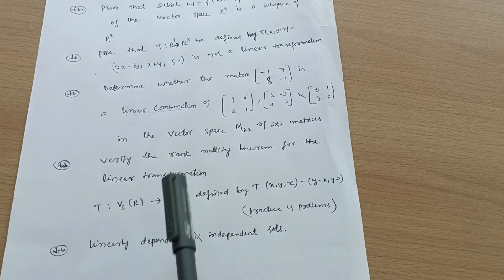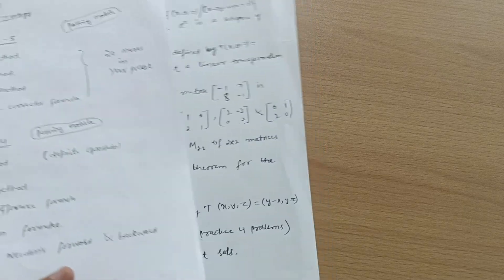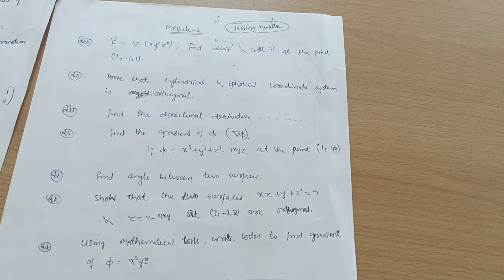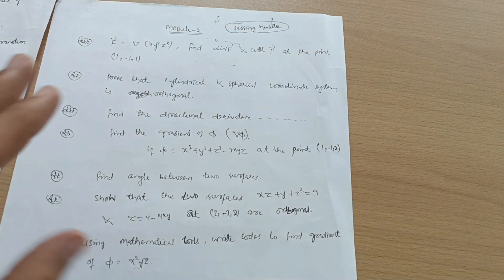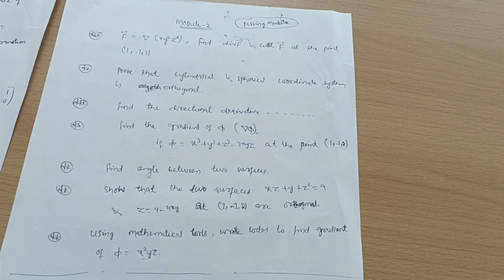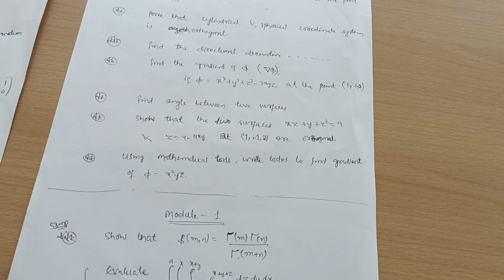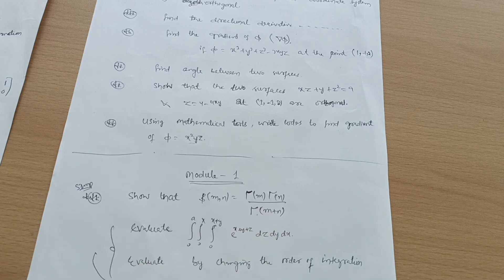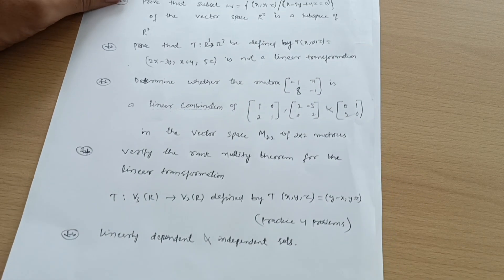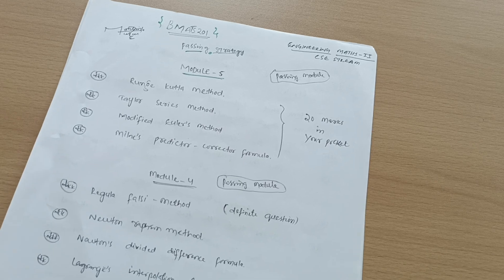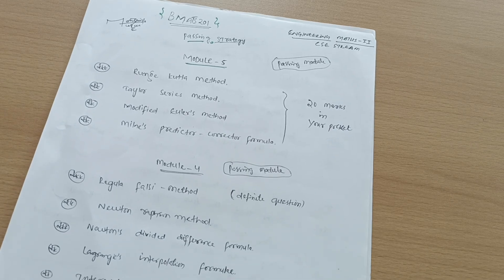So what is the passing strategy? You have to fully cover Module 5, Module 4, and Module 2 — these are the very simple modules. I believe you can easily score 60 marks from these three modules if you just practice. For the remaining modules, go through one question from Module 1 — that is, show that beta(m, n) equals gamma(m) times gamma(n) divided by gamma(m + n). For Module 3, go through whatever topics are convenient for you. This much is enough — I hope this helps you in the examination. Thanks for watching, and I wish you all the best!